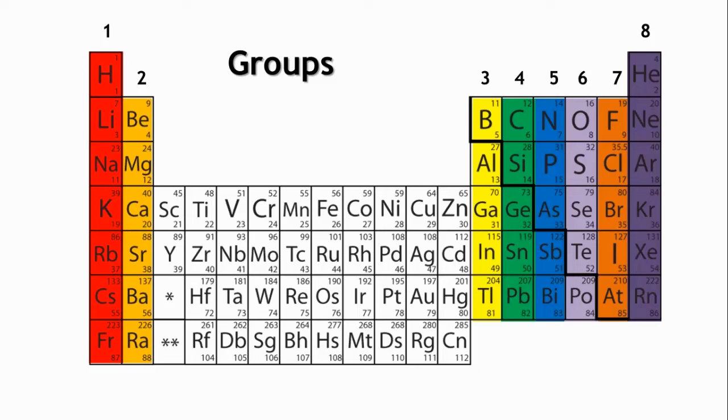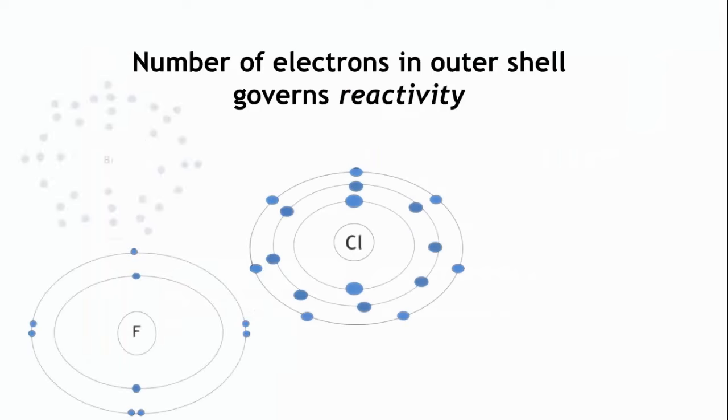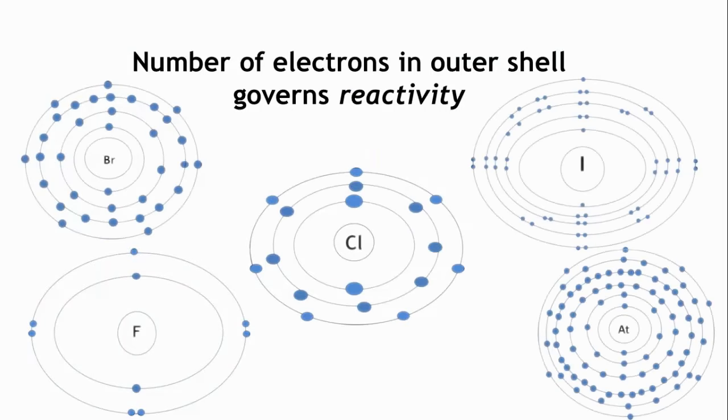The group number can tell you how many electrons are in this shell. For example, let's look at group 7: fluorine, chlorine, iodine, bromine, and astatine. They all have seven electrons in their outermost shell and all exhibit similar chemical characteristics.